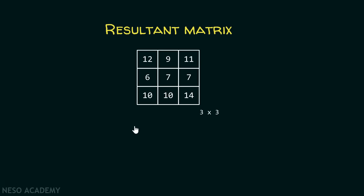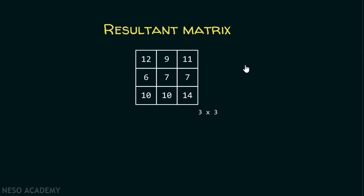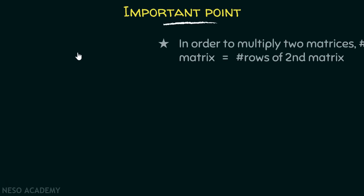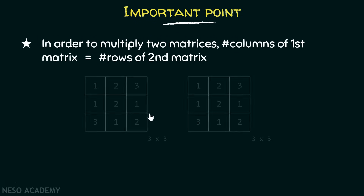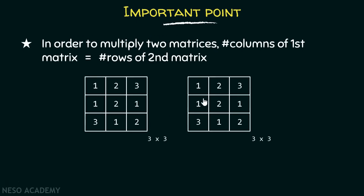After obtaining the resultant matrix, let's now understand some important points related to matrix multiplication. The first point: in order to multiply two matrices, the number of columns of the first matrix must be equal to the number of rows of the second matrix. In this example, we can see that the number of columns of this matrix is equal to the number of rows of the other matrix. Therefore, we can multiply these two matrices.